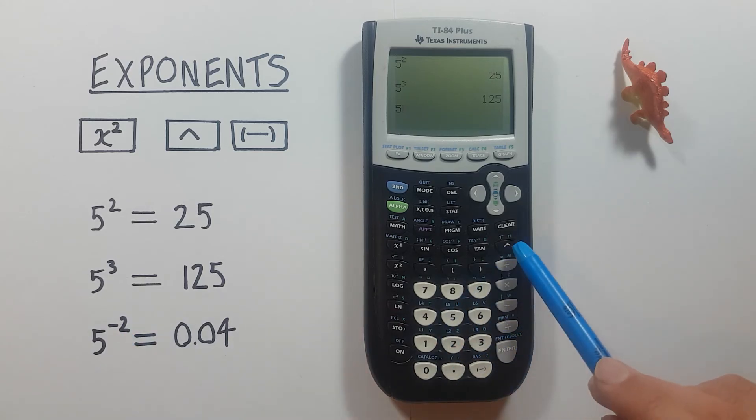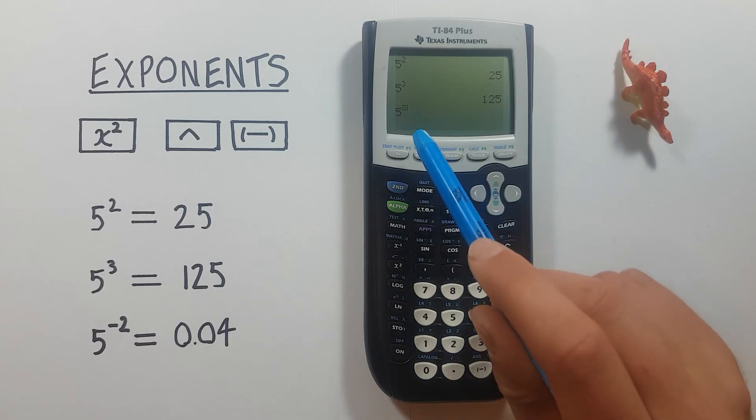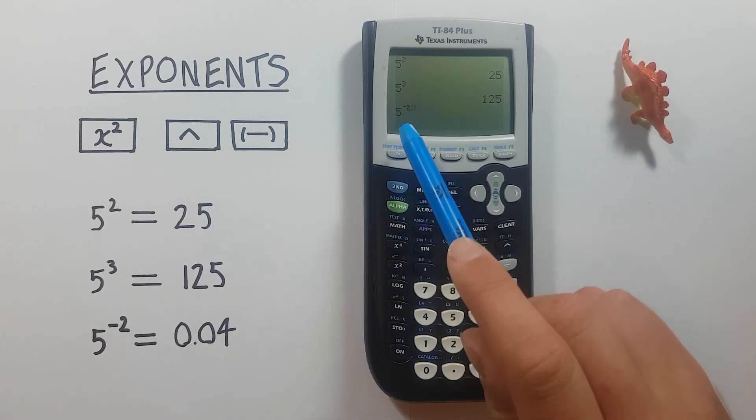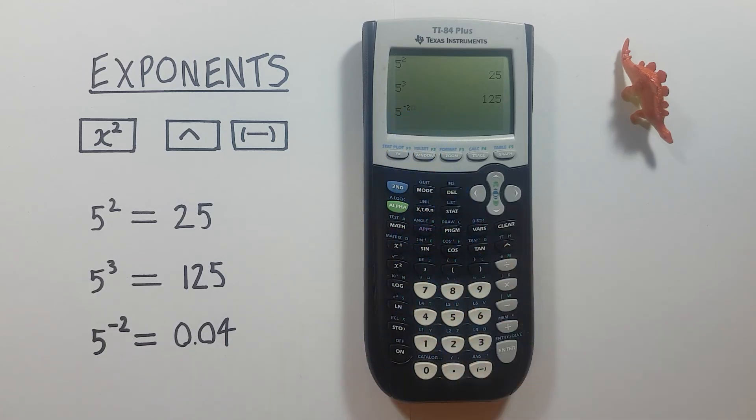Hit the up arrow or caret key, there's our box, then the negative sign, and then the 2. You can see we have an exponent of negative 2 and press enter.